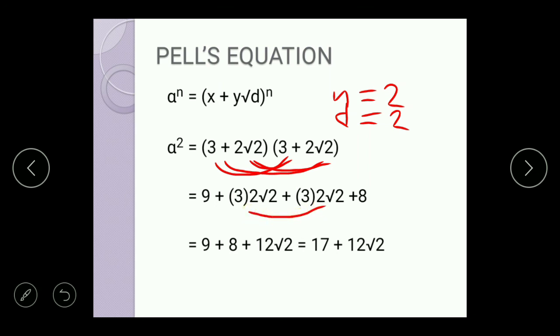Then simplify na natin: 9 plus 8 plus 6 square root of 2 plus 6 square root of 2 equals 17 plus 12 square root of 2. So 9 plus 8 equals 17 plus 12 square root of 2. So our value of x is 17 and our value of y is 12. So 17 and 12 is another positive solution.